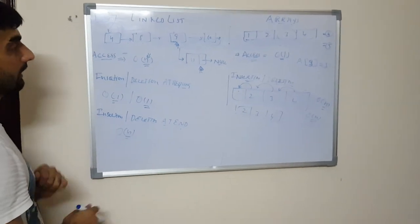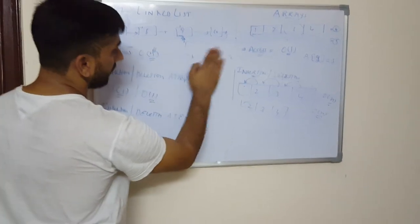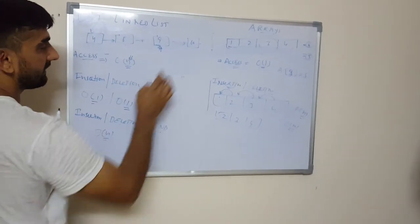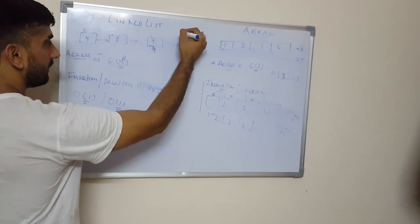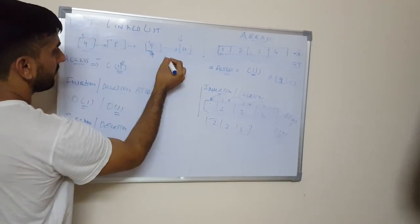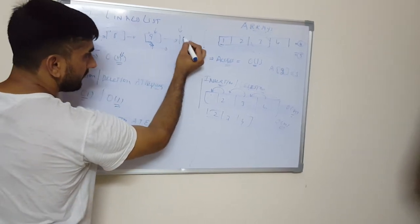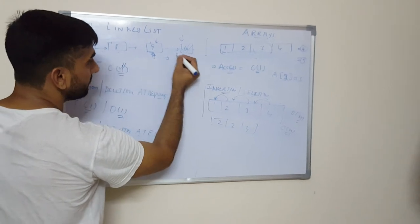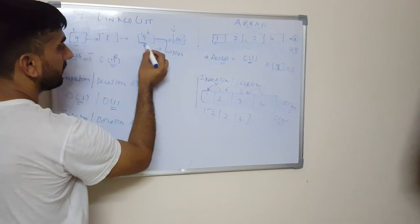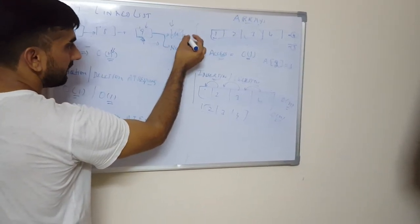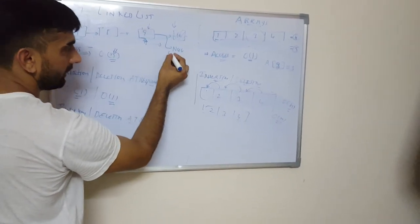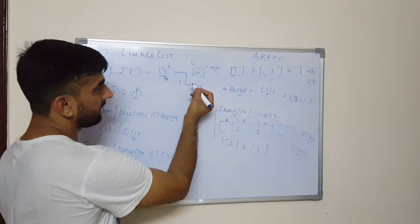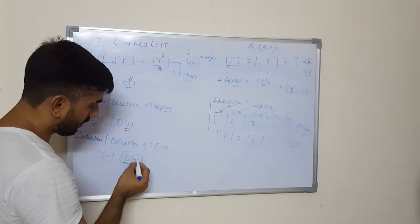For deletion at the end of the linked list, you again have to traverse all of the linked list to reach the last node. Then the next pointer of the second-to-last node will now point to null, and the old last node will be dumped and marked as null. So this node becomes the new last node. Performing deletion at the end is again going to take O(N) time complexity.